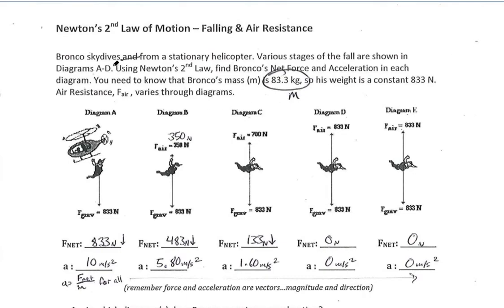Let's see what's going on here with Bronco. So Bronco skydives from a stationary helicopter. He's just jumping out of a helicopter, and various stages of the fall are shown in diagrams A through D. Looking at here, we're going to see what's going on as he's falling. Using Newton's second law, find Bronco's net force and acceleration in each diagram.